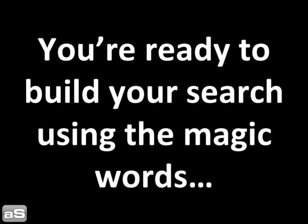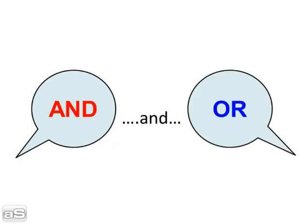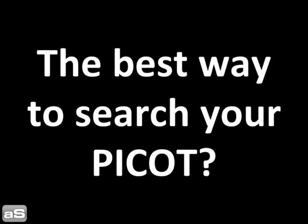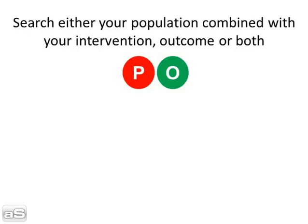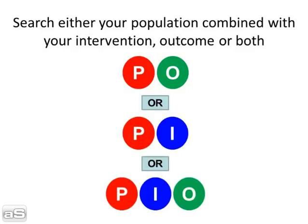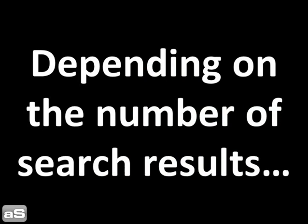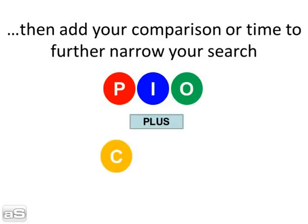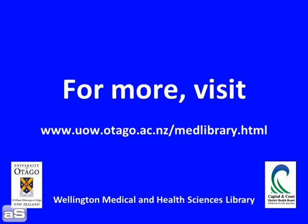Once you've done your brainstorm, you're ready to build your search using the magic words: AND and OR. The best way to search your PICO is to search either your population combined with your intervention, outcome, or both, depending on the number of search results. Then add your comparison or time to further narrow your search. For more, visit the Wellington Medical and Health Sciences Library, University of Otago.